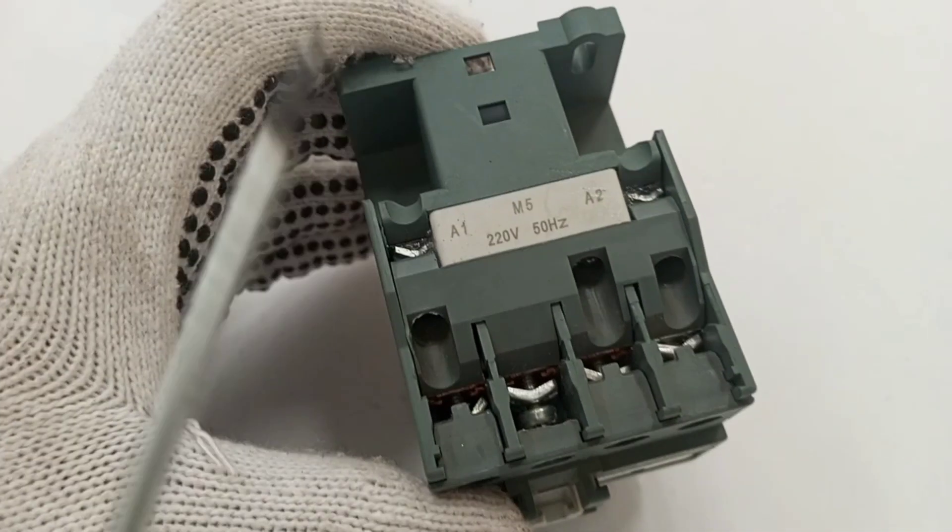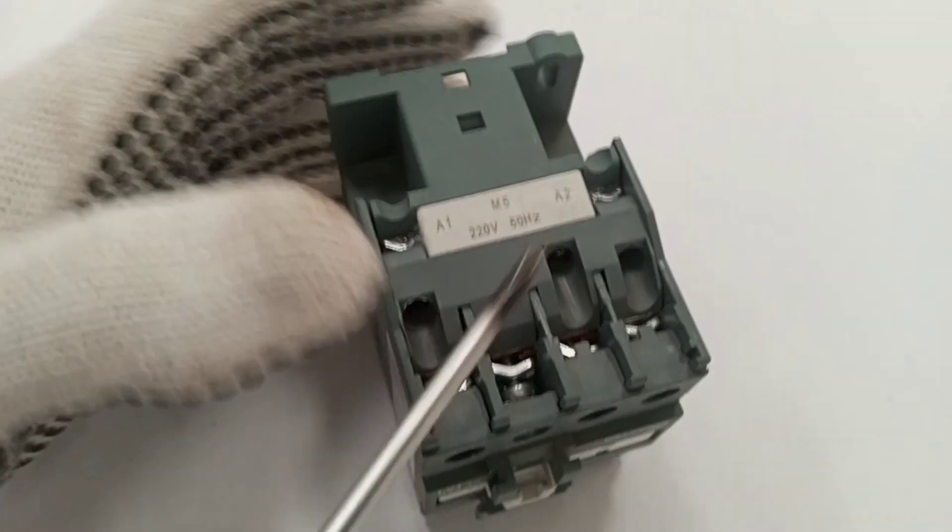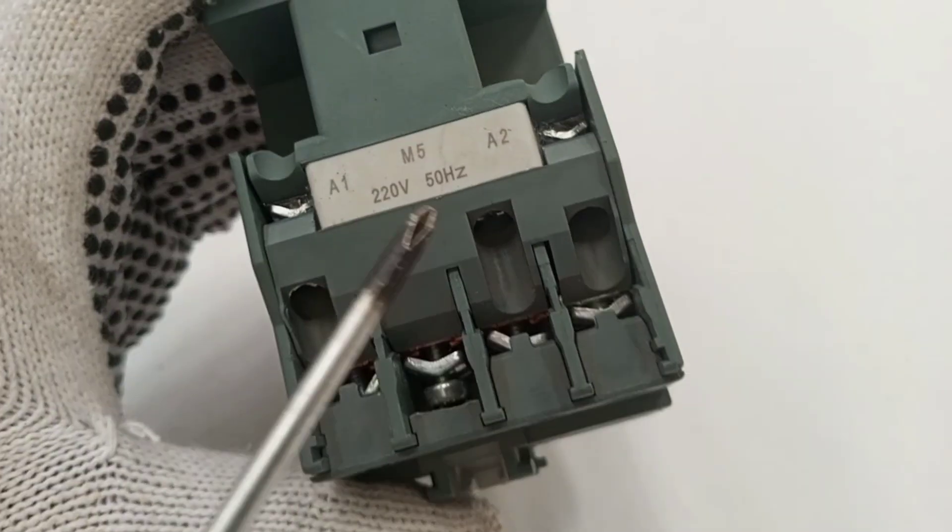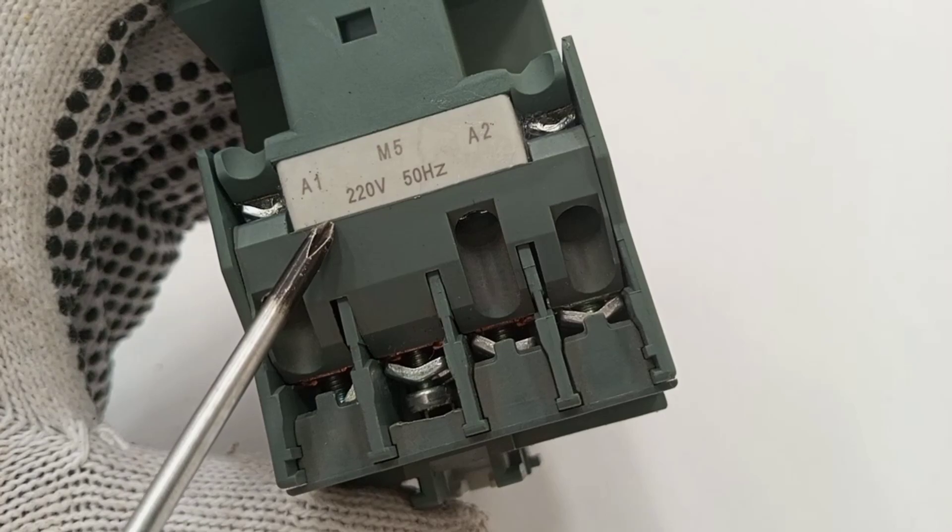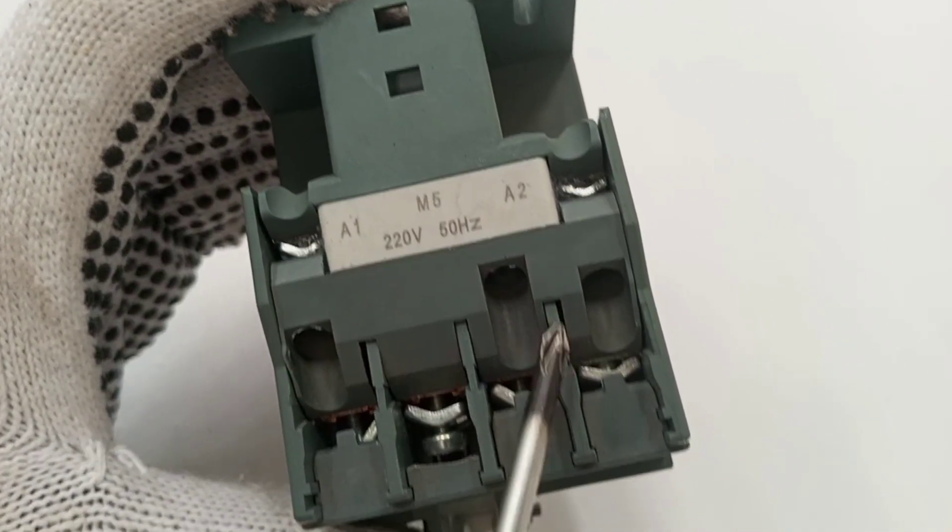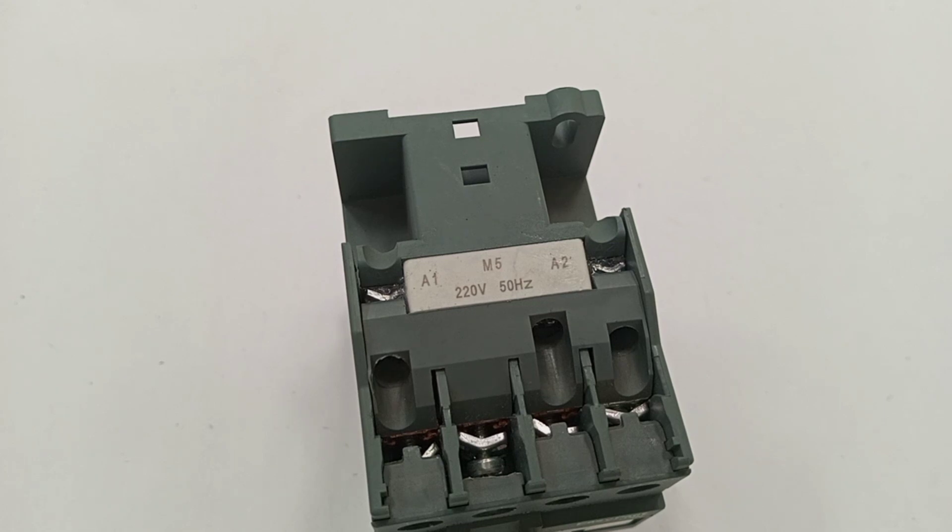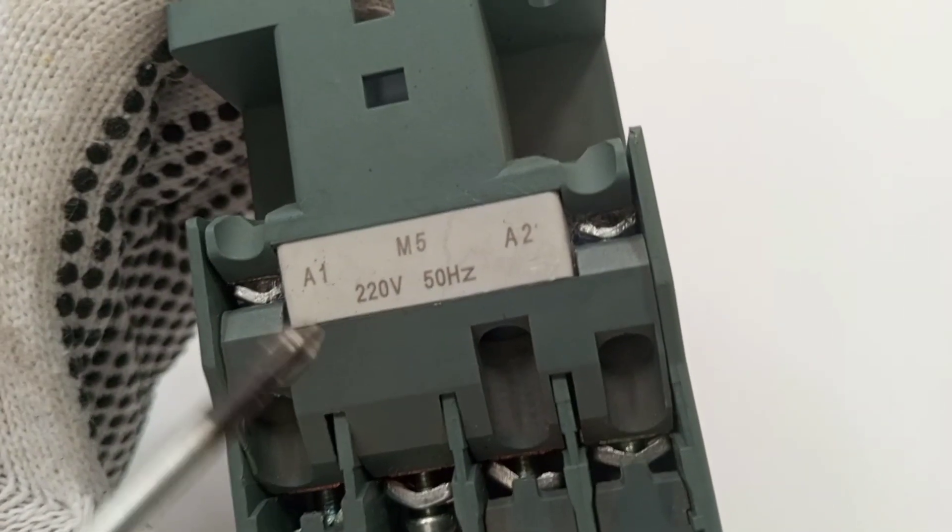There is no one standard voltage for contactor coils. The contactor coil can be designed to work on 220 volts like this one, but there are others that work on 120 volts and 400 volts AC. There are also contactor coils that will only work on 12 volts DC, and there are others that work on 24 volts DC.